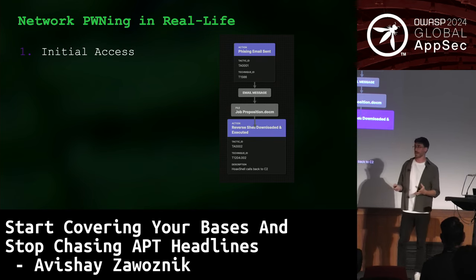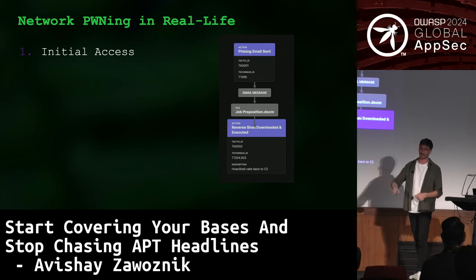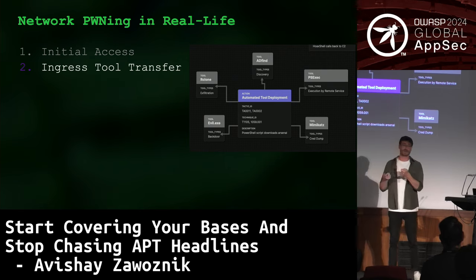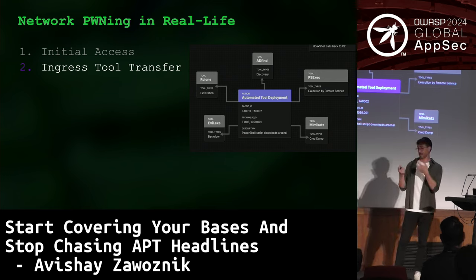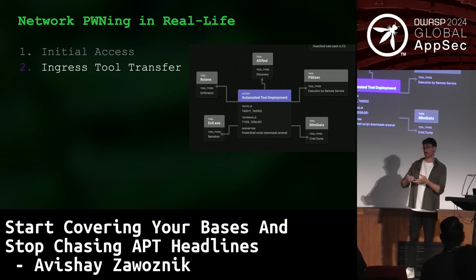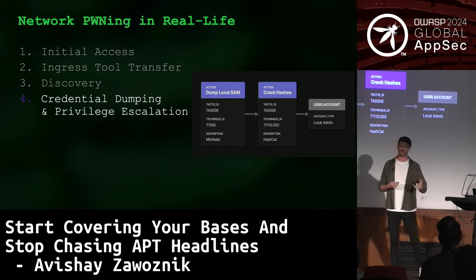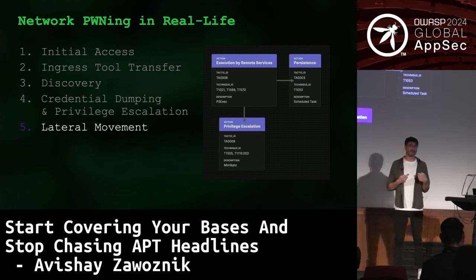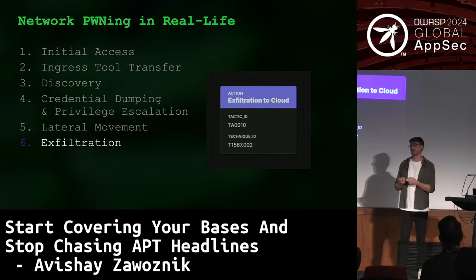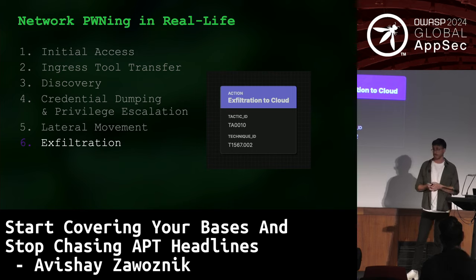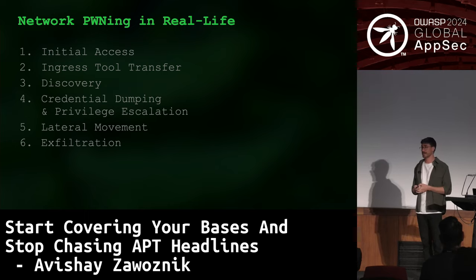First, there's initial access: the attacker gets a foothold on patient zero. Then ingress tool transfer: the attacker sends useful tools to that machine. Discovery: understanding what other important assets exist. Then credential dumping, privilege escalation, and lateral movement — all of which together strengthen the attacker's foothold. Eventually there's some impact, which can vary — encrypting all data across the network, or a very popular tactic: exfiltration.